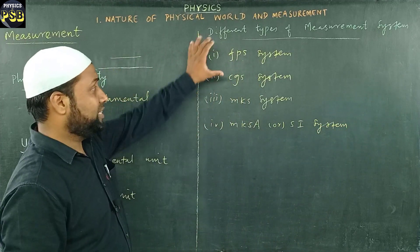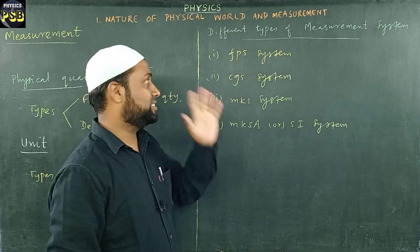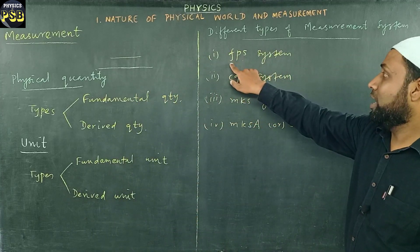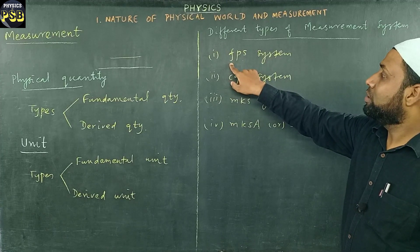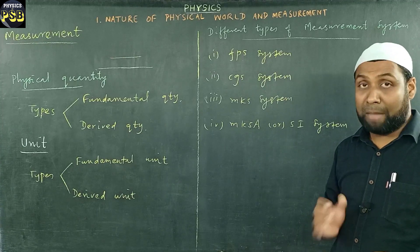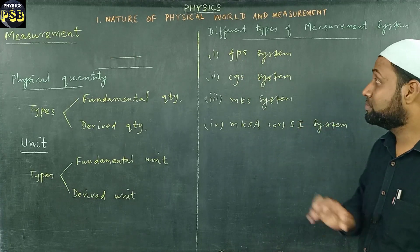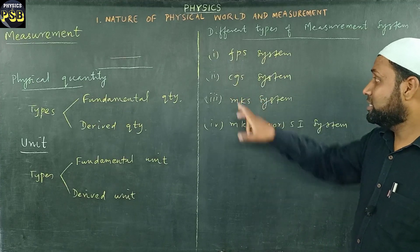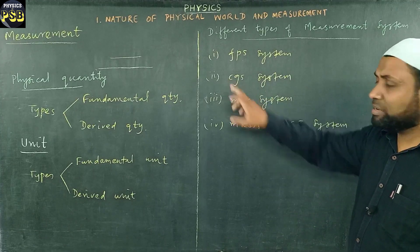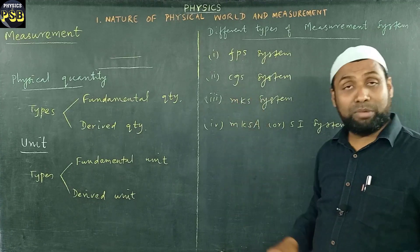Let me tell you one by one what these stand for. FPS stands for Foot, Pound, and Second system. In this system, foot is used to measure length, pound is used as the unit of mass, and second is used to measure time. In the CGS system, it stands for Centimeter, Gram, and Second. Here centimeter is used to measure length, gram is used to measure mass, and second is used to measure time.